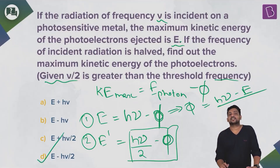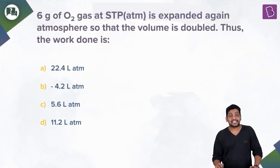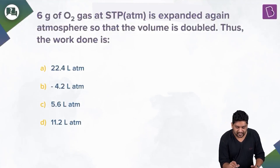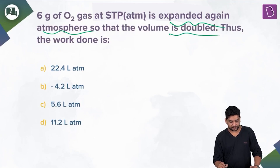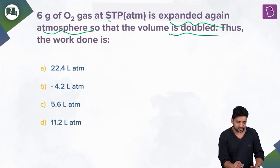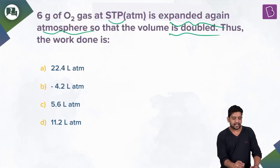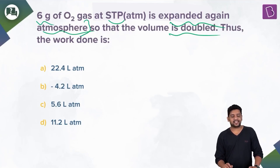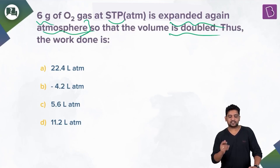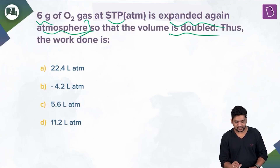Next question: 6 grams of oxygen gas at STP is expanded against the atmosphere such that the volume is doubled. The work done is to be found. The key note is 'against atmosphere,' which means P_external = 1 atmosphere, and the volume is doubled.